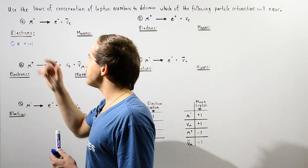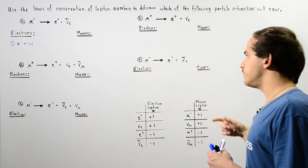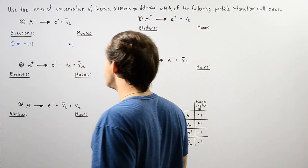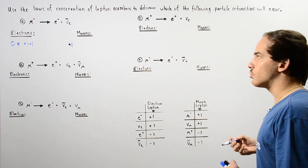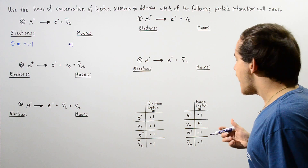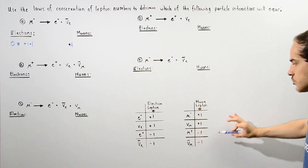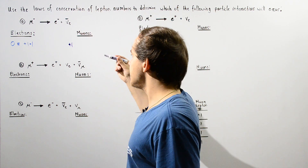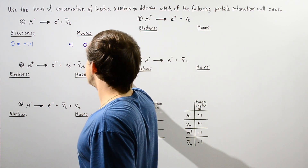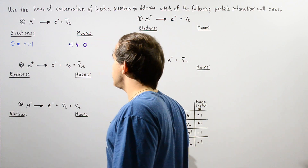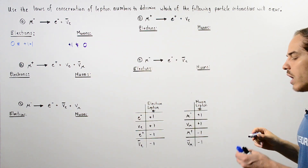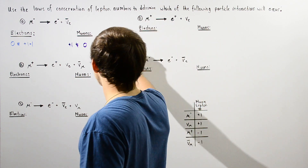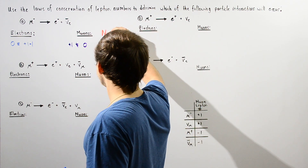What about the muon lepton number? On the left side, the muon gets a positive one. On the right side, neither the electron nor the electron anti-neutrino appear on the muon lepton table, so they get zero. Since one does not equal zero, the muon lepton number is not conserved, and so reaction A will not readily take place.